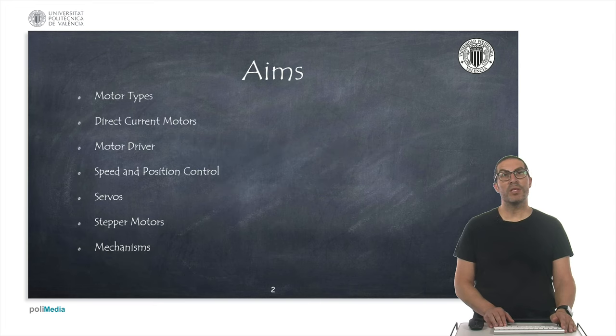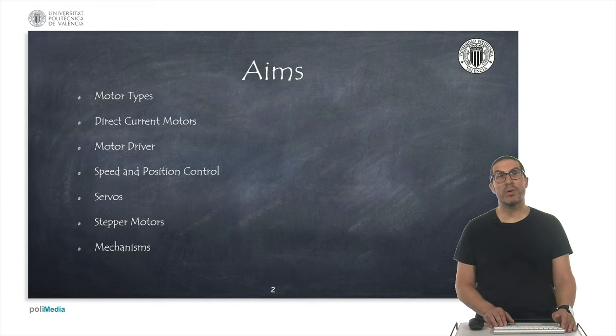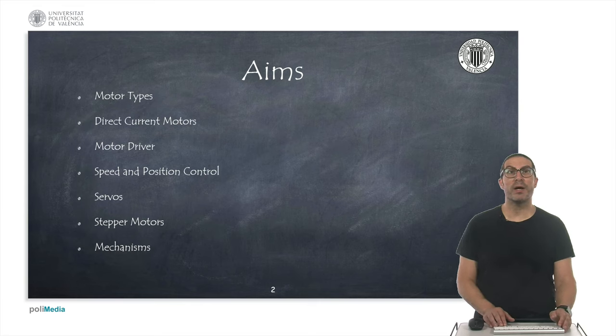This is the presentation outline. We will talk about motor types and we will focus on direct current motors and the elements for position and speed control including the motor drive. We will also talk about servo motors and stepper motors, and finally we will describe some additional mechanisms that are usually included in many robots.